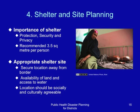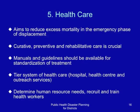Health care aims to reduce mortality in the emergency phase of displacement. Curative, preventive, and rehabilitative care is crucial. Manuals and guidelines should be available for standardization of treatment. A tier system of health care is important — that is, hospital, health center, and outreach services. Human resource needs should be determined, health workers recruited and trained, and placed where they are needed.